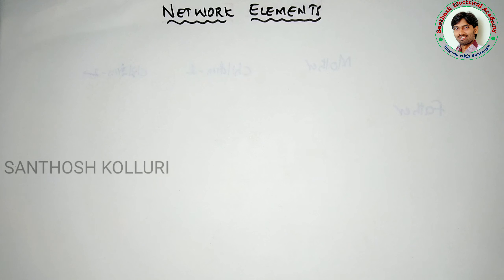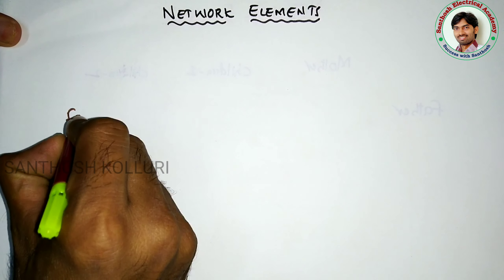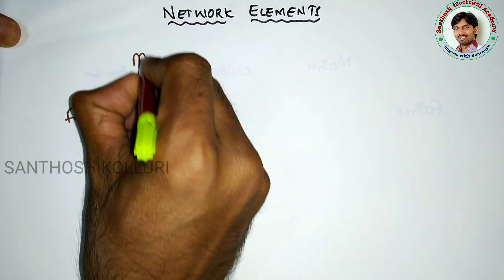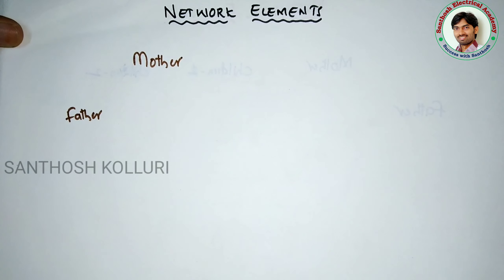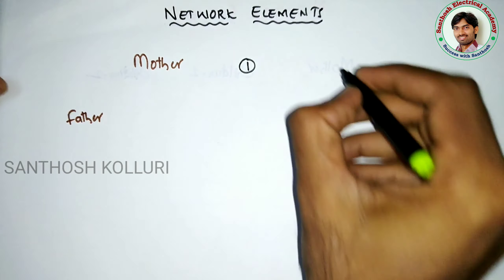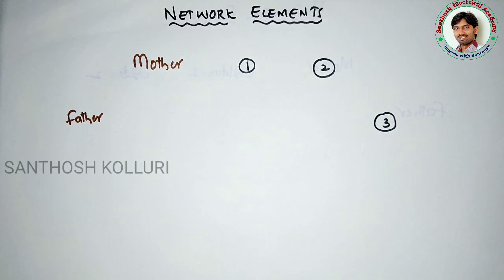Hello everyone, today in this class I am going to explain network elements. To understand these network elements, I am considering a small family consisting of a father, mother, and three children — children number one, children number two, and children number three. So there are five characters total in this small family.